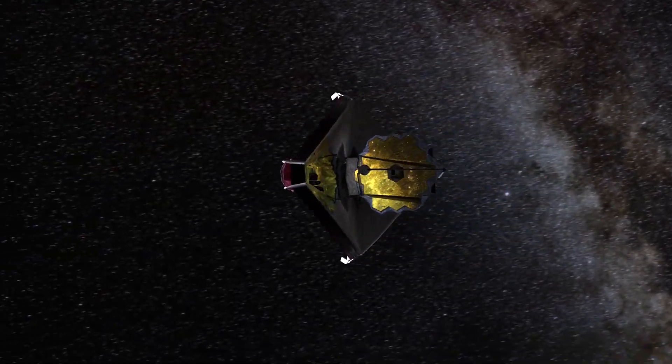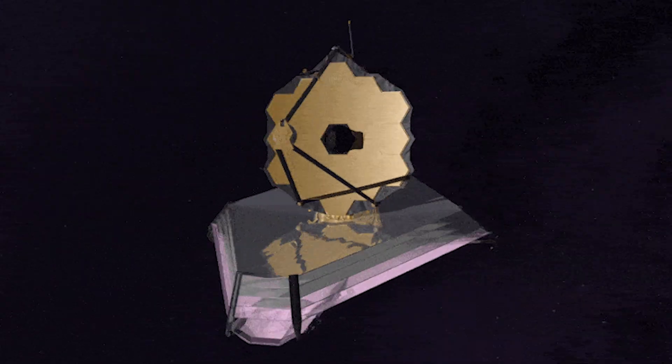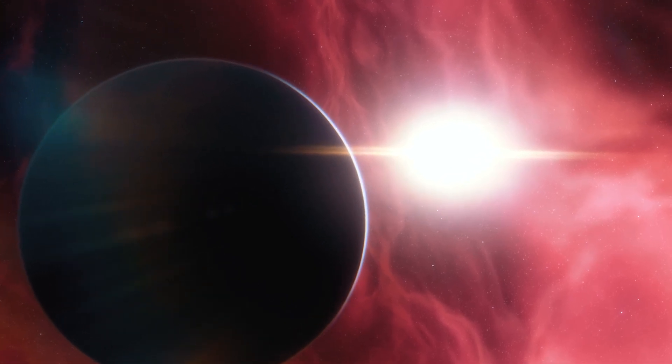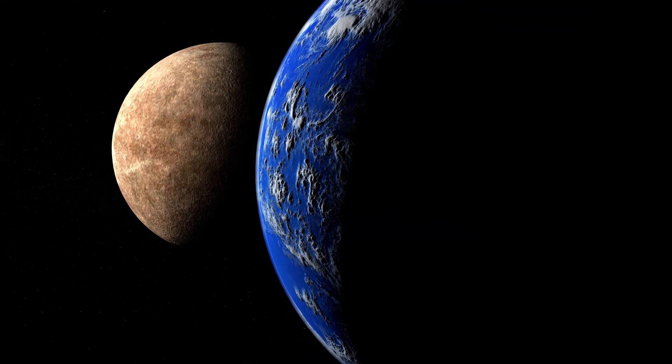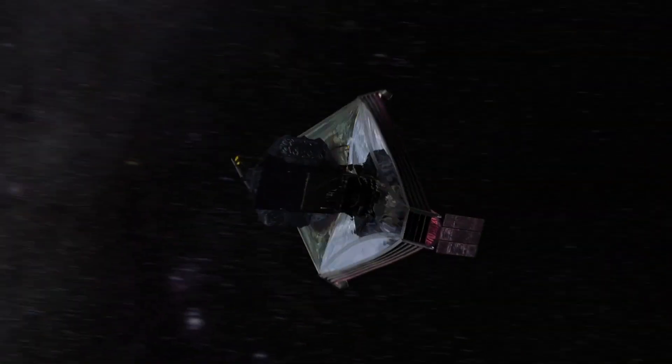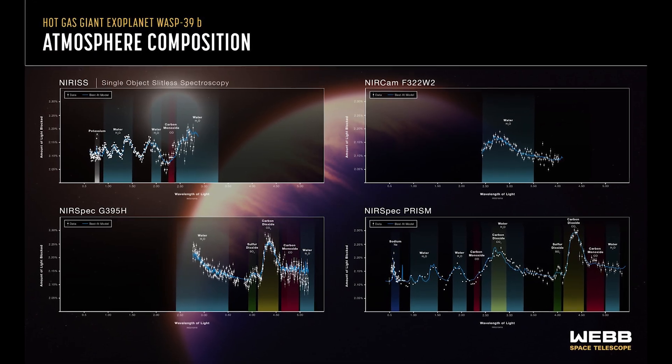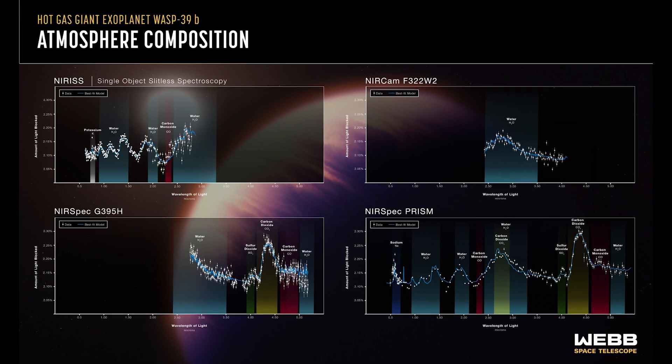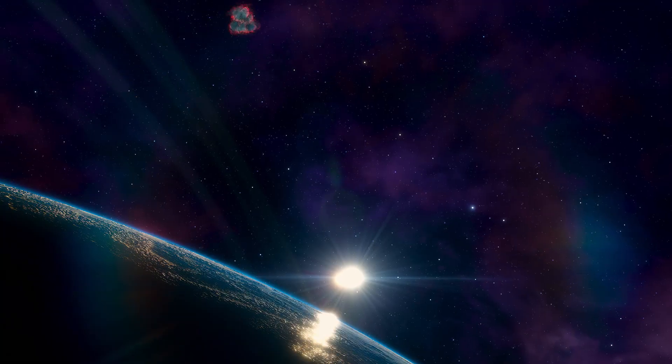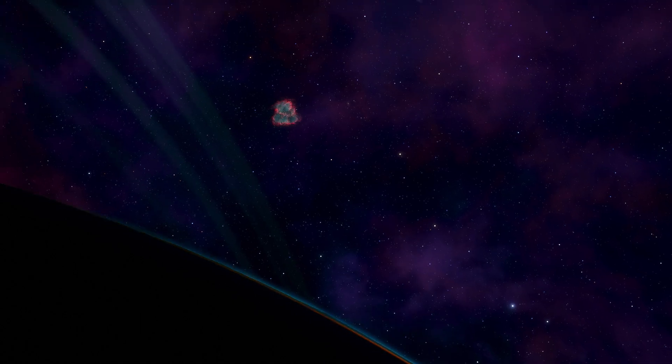Another cornerstone of James Webb Space Telescope's mission is the study of exoplanets and their atmospheres. With its unprecedented resolution and sensitivity, the telescope can detect the faint signatures of water, carbon dioxide and other molecules in the atmospheres of distant worlds, offering clues about their potential to harbor life.